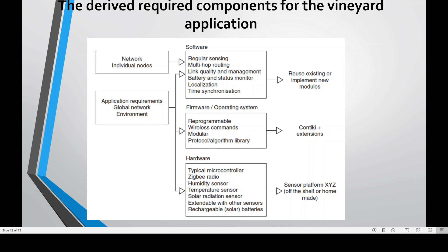The derived required components for the vineyard application are shown in this figure. They cover software, firmware, operating system, and hardware. At the network level, we take individual nodes, application requirements, global network, and the environment into consideration. For software, we consider regular sensing, multi-hop routing, link quality and management, battery and status monitoring, localization, and time synchronization.